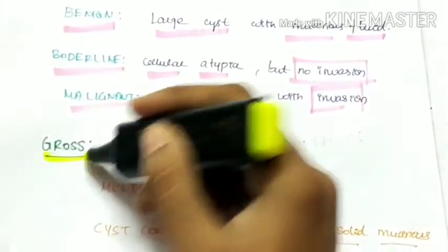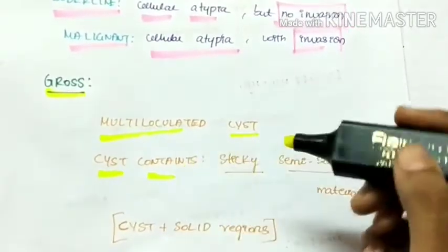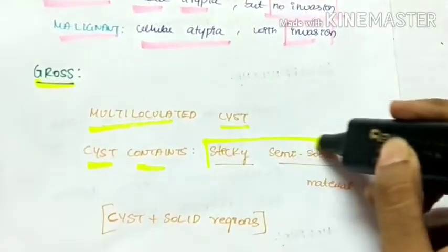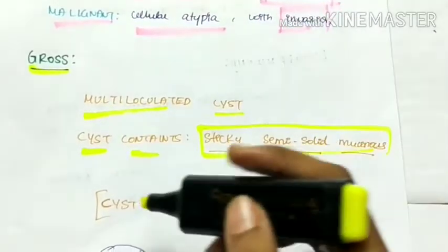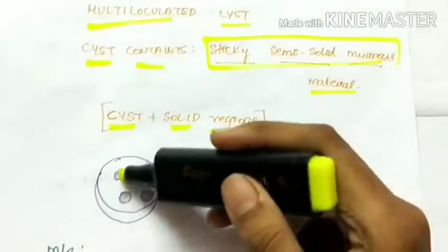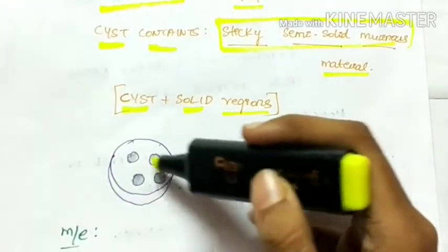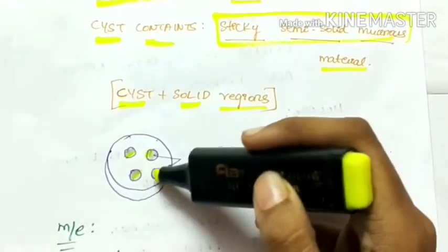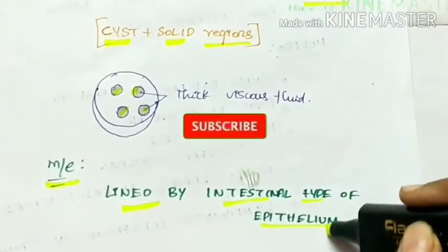Grossly, there is a multi-loculated cyst in mucinous ovarian tumor and the cyst contains sticky semi-solid mucinous material. So there is cyst as well as solid regions — cysts with thick viscous fluid and solid regions. Microscopically, it is lined by the intestinal type of epithelium.